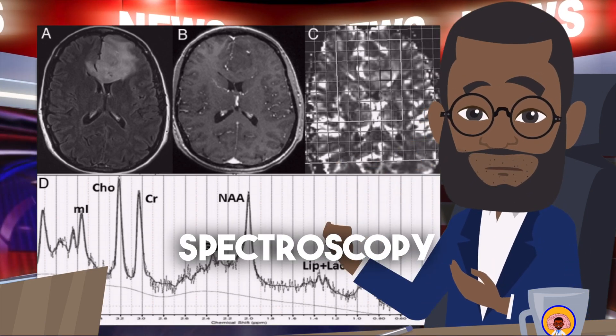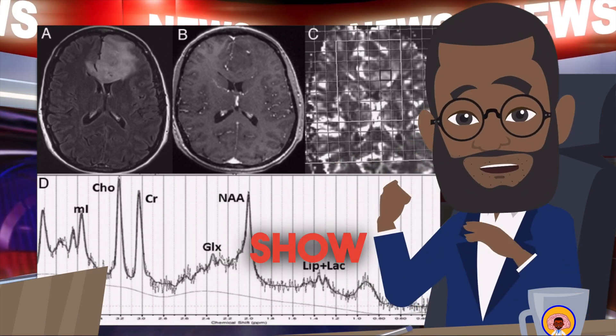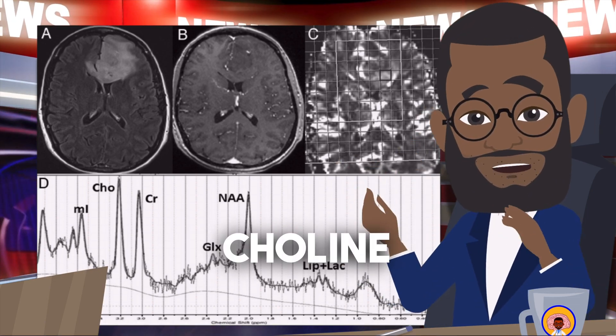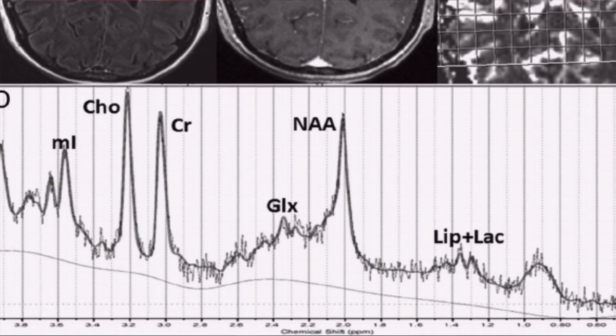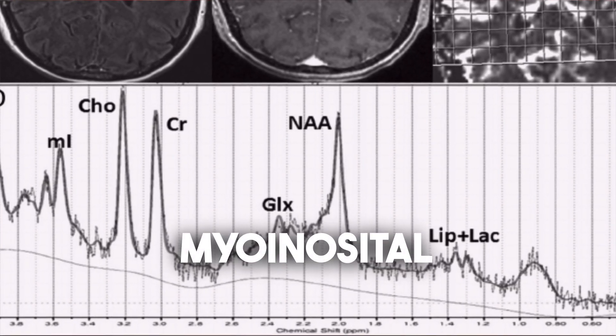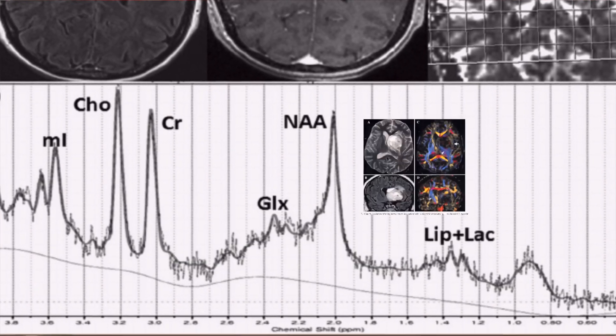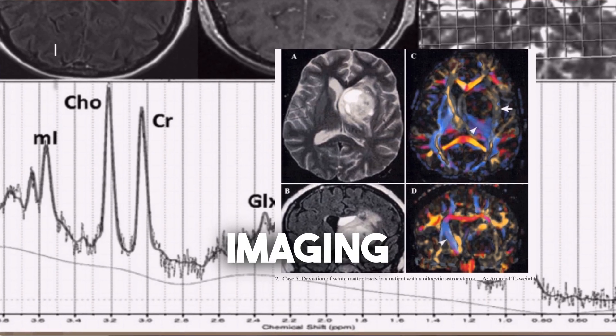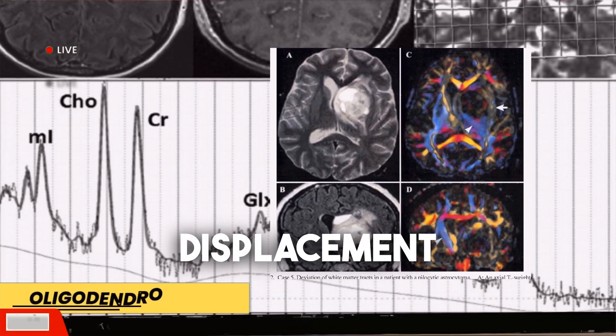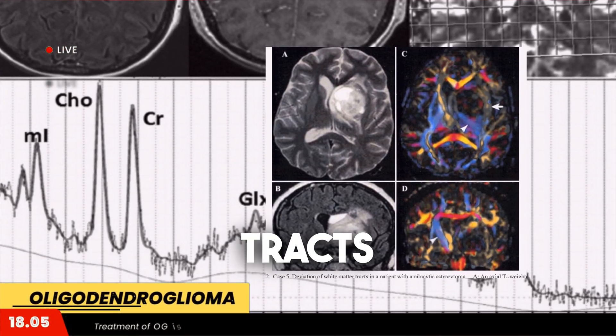On spectroscopy, they show elevated choline, decreased NAA, and elevated myoinositol. Diffusion tensor imaging shows displacement of white matter tracts.